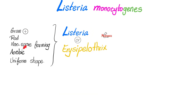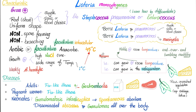Listeria is a gram-positive rod, non-spore-forming, aerobic, uniform shape. The rods are short and could be singular, in pairs, or in short chains — similar to Streptococcus pneumoniae and Enterococcus. It's very important to differentiate between Enterococcus and Streptococcus pneumoniae — refer to past videos. You also need to differentiate between Listeria and Streptococcus pneumoniae because both cause meningitis, are gram-positive, and could appear singular, in pairs, or short chains.